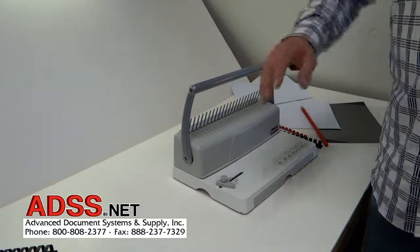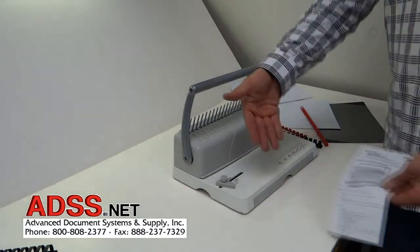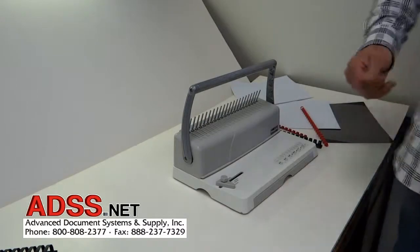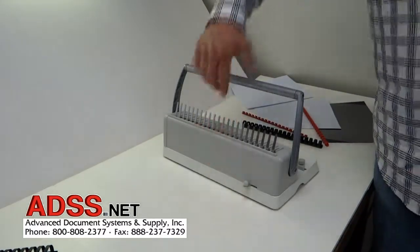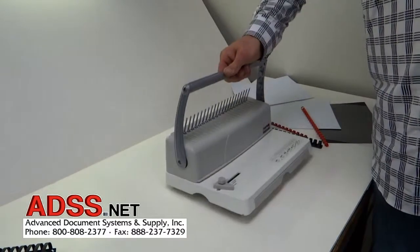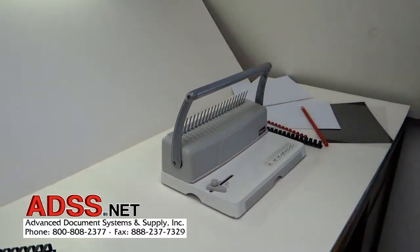It also has a depth guide which controls how deep the holes are punched into the sheet, and that's accessed right here in the back. You don't need to change that often, but if you are tight on a binding, you can adjust the holes closer to the edge so you can fit a few more sheets in and the inner edges of the paper won't hit each other as they lay open flat.